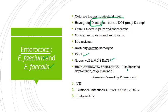Enterococci are gram-positive cocci that grow in pairs or short chains. They're pretty hardy — they can grow anaerobically or aerobically. They're bile resistant and normally gamma hemolytic. To differentiate them, you use PYR testing and growth in NaCl broth. Besides their ability to grow biofilms like all organisms in this discussion, they have exceptionally high antibiotic resistance — so much so that they got their own name: VRE, vancomycin-resistant enterococci.